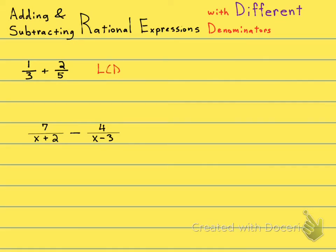So the LCD for this problem is going to be 15. Maybe you see that, maybe you don't see it yet. What you can do is we are going to multiply both fractions. You have to multiply the top and the bottom by the same thing. I'm going to multiply this one times 5 over 5, reminding you that 5 over 5 is just 1. Anything times 1 doesn't change the value, just changes the way it looks.